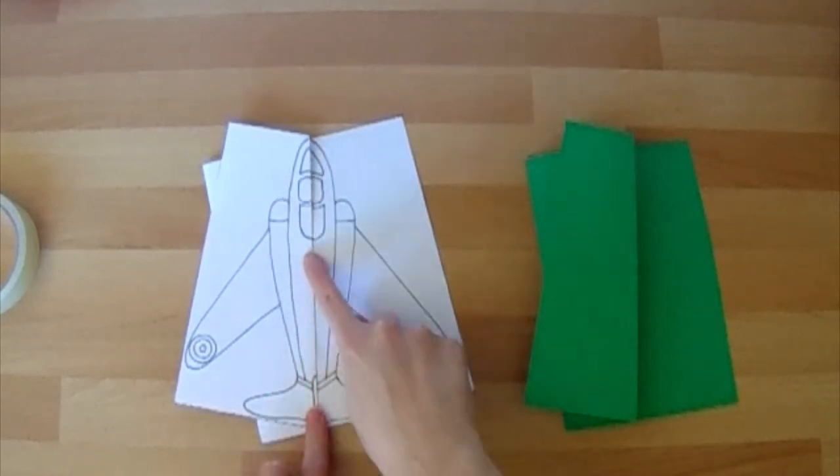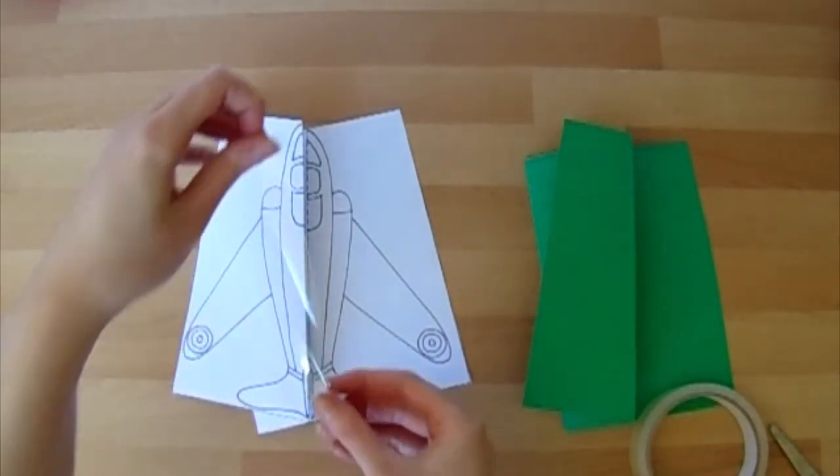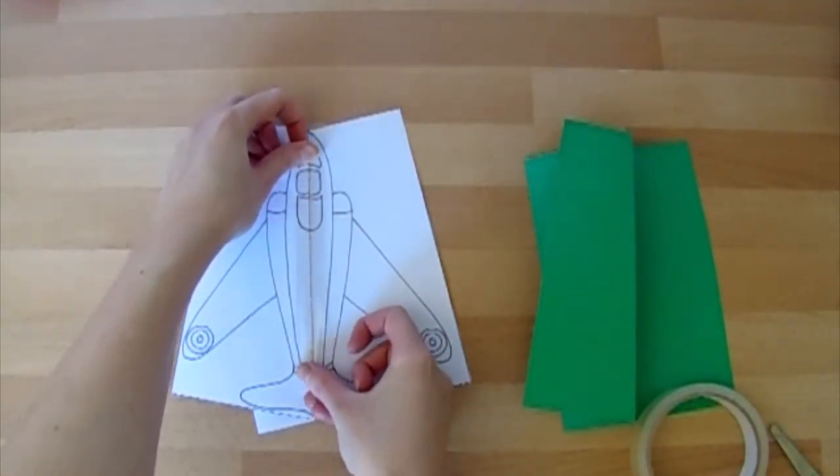And you're going to want to put a piece of sellotape down this join to stop it from coming undone. One for this side. Make sure you've done your coloring before you stick your sellotape on.